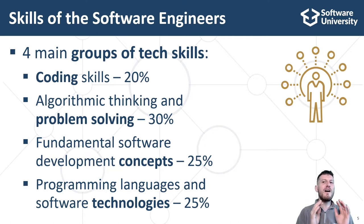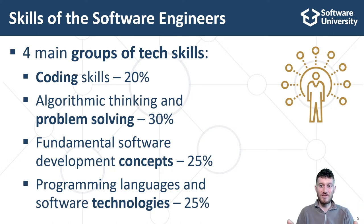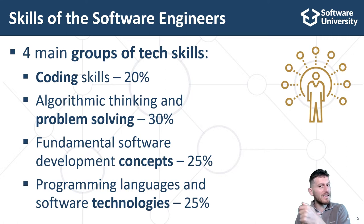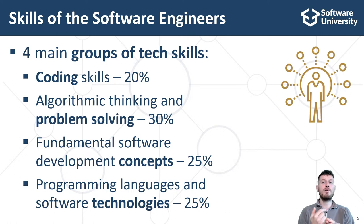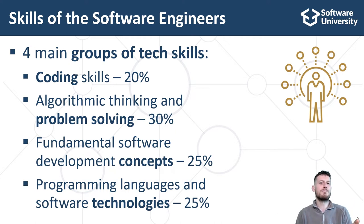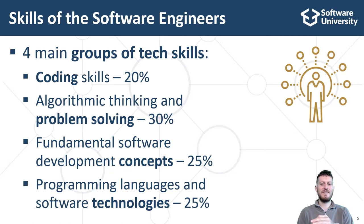To be a software developer, you need to have all four groups of essential developer skills. You should learn them from experience, from training courses, from books, or from all sources combined. In addition to tech skills, developers should also have soft skills such as verbal and written communication, teamwork, organizational skills, time management, planning and prioritization, accountability, empathy, adaptability, creativity, and attention to detail.